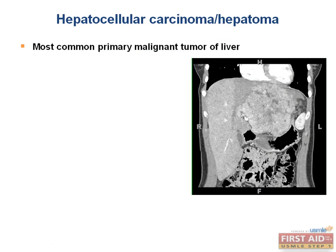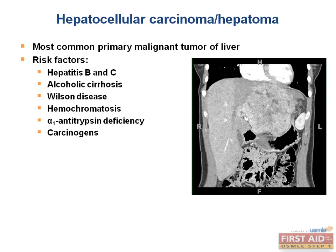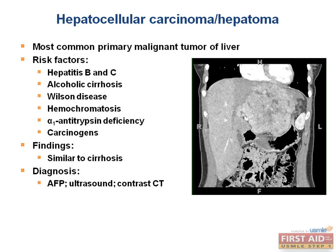Hepatocellular carcinoma, or HCC, is the most common primary malignant tumor of the liver. Preceding insults include hepatitis B, hepatitis C, Wilson's disease, hemochromatosis, alpha-1 antitrypsin deficiency, alcoholic cirrhosis, and carcinogens such as aflatoxin from Aspergillus. Findings are similar to cirrhosis: jaundice, hepatomegaly, ascites, polycythemia, and hypoglycemia. HCC spreads hematogenously, and the tumor marker is alpha-fetoprotein, or AFP. It can also be diagnosed via ultrasound and contrast CT.